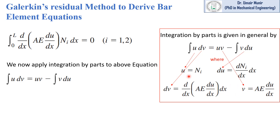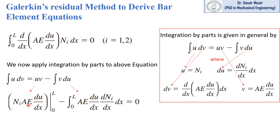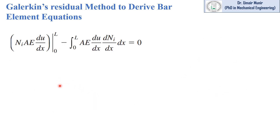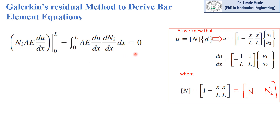We substitute the values of u, delta_u, delta_v, and v into the equation, giving us the equation in the new form. We have u equal to N_i, and v equal to AE times delta_u over delta_x. Placing these two values, v is equal to AE times delta_u over delta_x, and delta_u equals delta_N_i over dx. For further solution, we know that displacement u equals the N matrix times the d matrix.